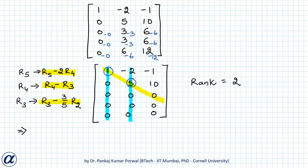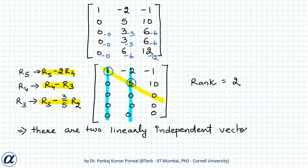The rank equals 2, which is the number of linearly independent vectors. The linearly independent vectors correspond to the pivot columns — the 1st and 2nd columns — which correspond to vectors V1 and V2. So we can conclude that V1 and V2 are linearly independent.